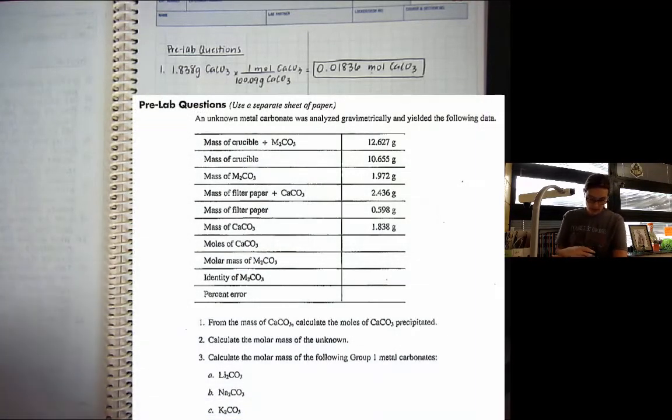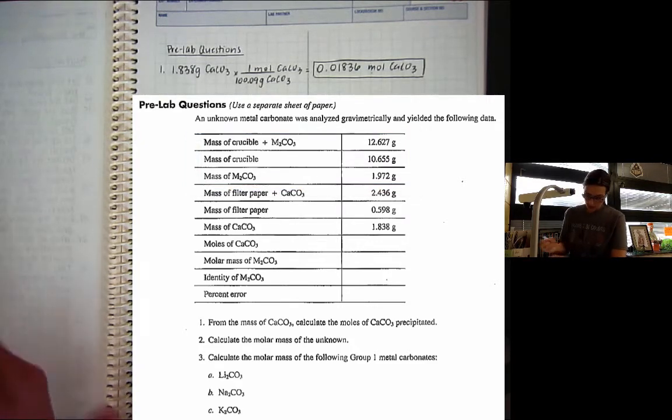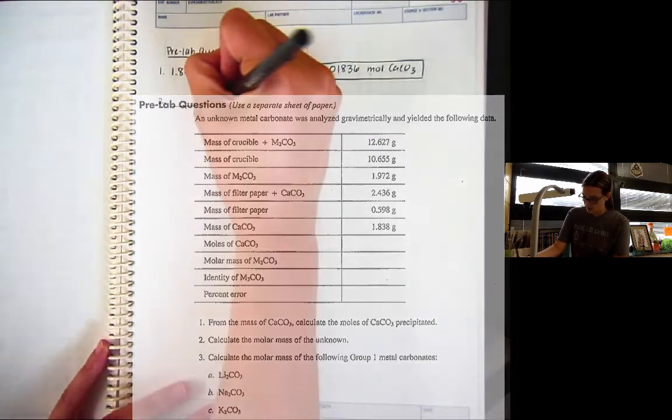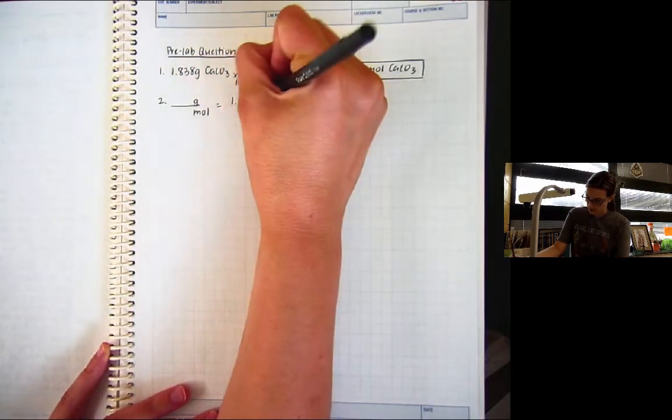So if we take a look at the data table, we are given the mass of the crucible and the unknown. And we're given the mass of just the crucible. And then we're also given the mass of the unknown. So to figure out the mass of the unknown, we just had to subtract. So the mass of the unknown from the data table is 1.972 grams.